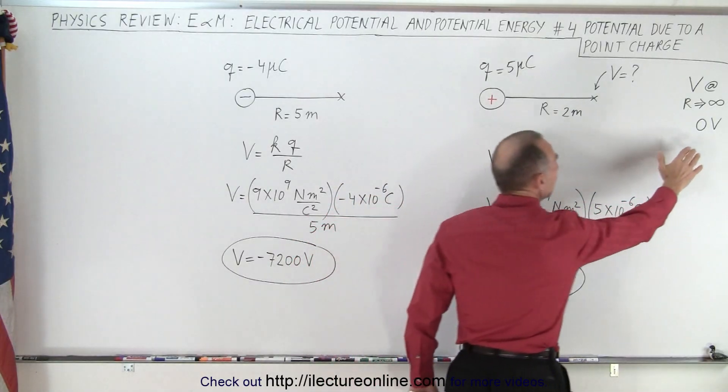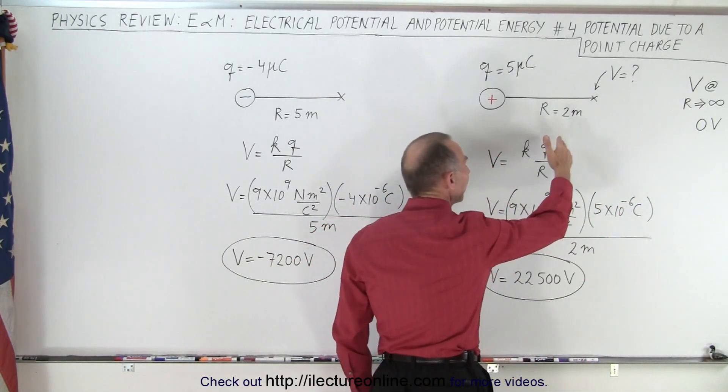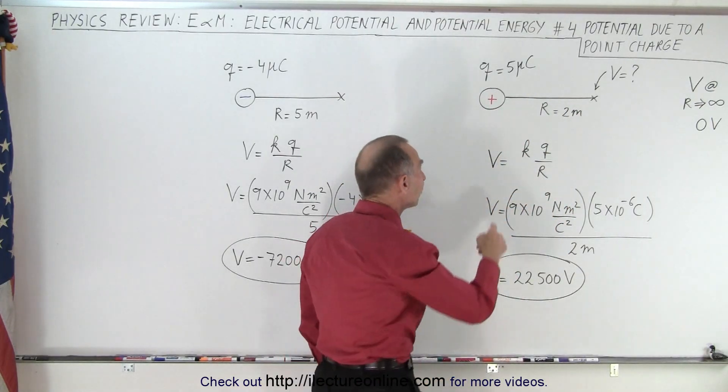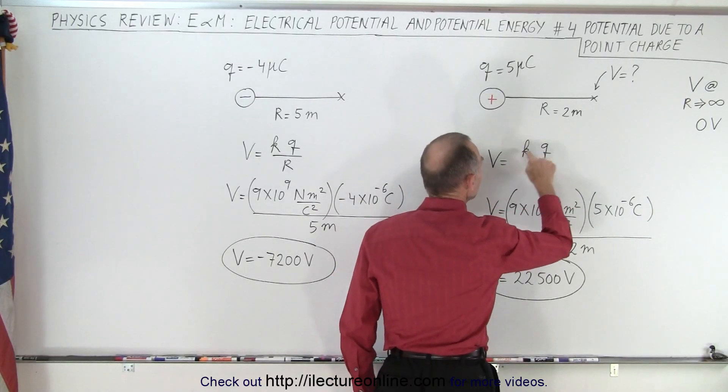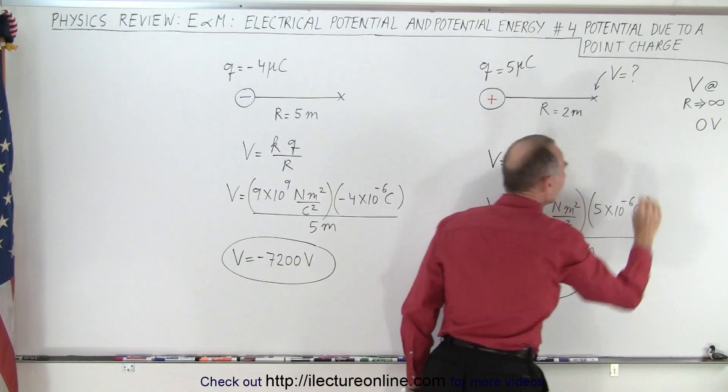At infinity, we say that the electrical potential is at zero volts, and so what is it then at some other point near a point charge? The equation is that the voltage at that point, therefore, is kq over r, and it is in reference to at infinity, where the voltage is zero.